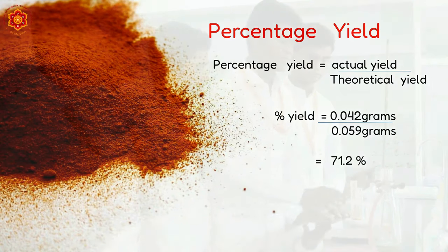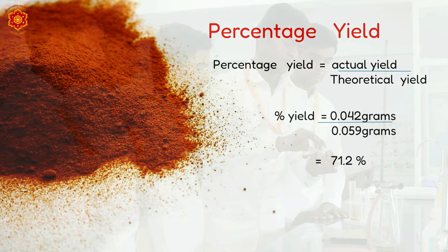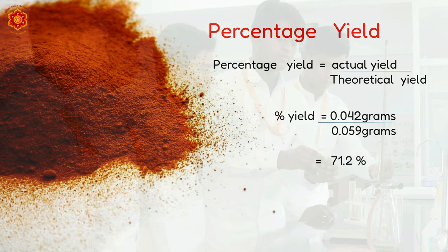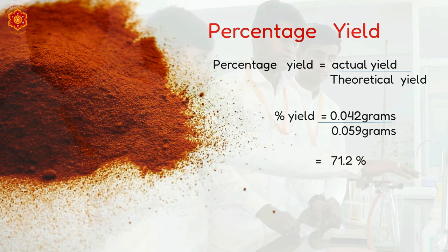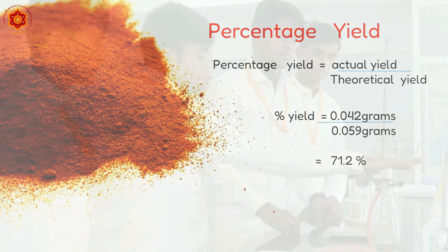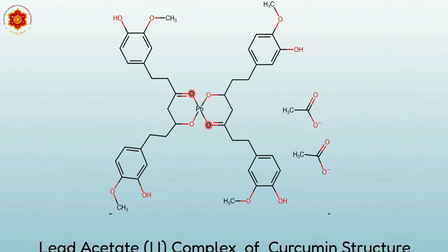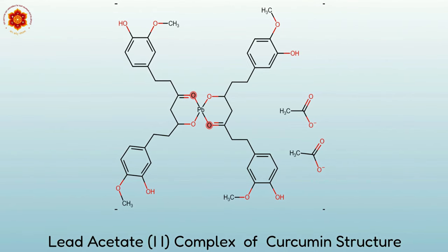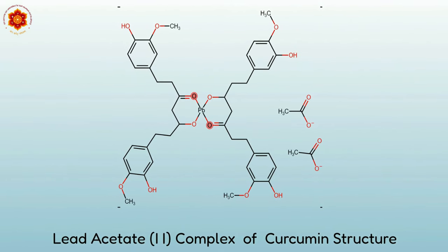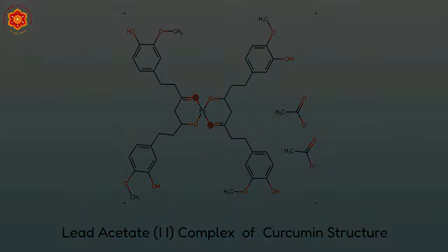After following the scientific steps to prepare the complex, we obtained 0.042 grams of Curcumin Lead Acetate complex. In terms of percentage yield, we got 71.2%. The structure of the Curcumin Lead Acetate complex, also known as Lead-Bis-Curcuminato complex, consists of two curcumin molecules that coordinate with one lead ion.